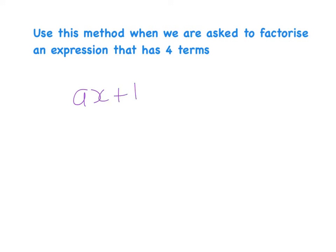ax plus by plus ay plus bx. So you can see here we'll be given four terms and we've been asked to factorise. This method is called grouping the terms.